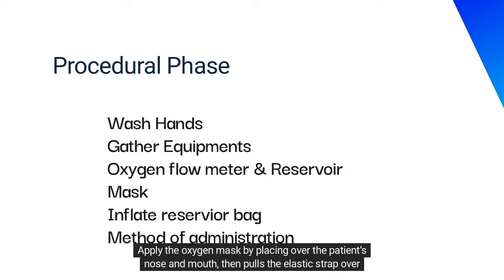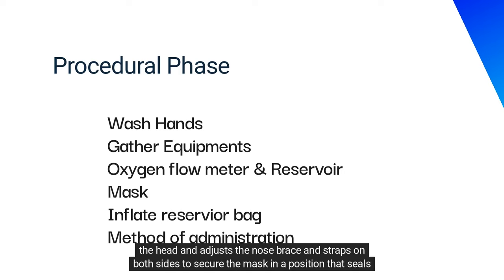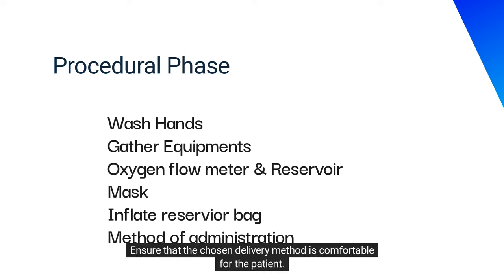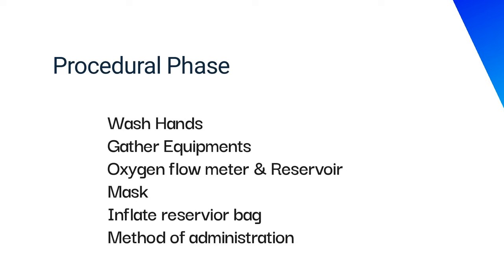Apply the oxygen mask by placing it over the patient's nose and mouth, then pull the elastic strap over the head and adjust the nose brace and straps on both sides to secure the mask in a position that seals the face but is not too tight. Ensure that the chosen delivery method is comfortable for the patient.